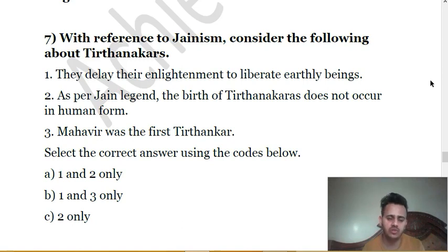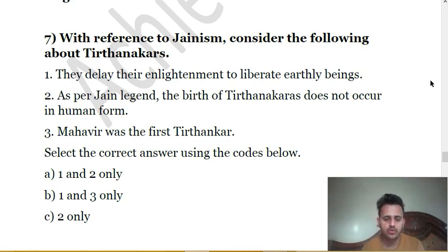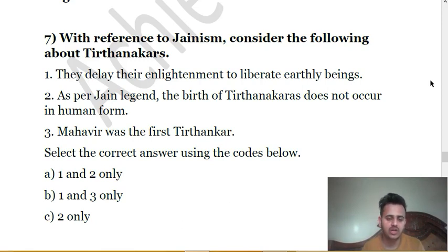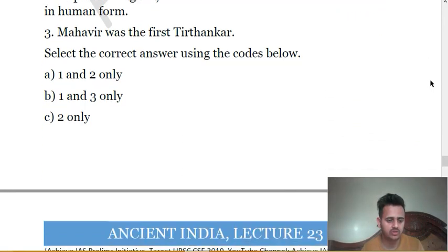All of these statements are incorrect. The first statement is clearly incorrect — once an individual attained enlightenment, he was called a Tirthankara, whose purpose was to show the path of enlightenment to followers. The second is also wrong — a person did not automatically become a Tirthankara but attained it through severe restraint and Jain teachings. The third is also wrong — Mahavira was not the first Tirthankara; in fact, he was the last. The first Tirthankara was Rishabha. The solution is D, none of the above.